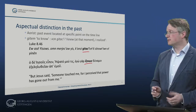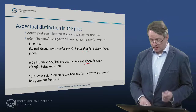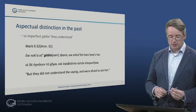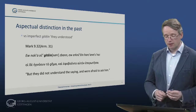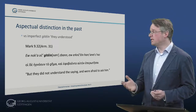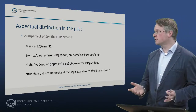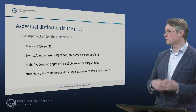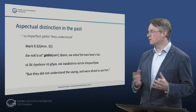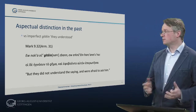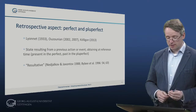In contrast, the imperfect 'gitein' — 'yev nuke hav vodsch gitein is banen' — but they didn't understand the saying and were afraid to ask him — represents a state of affairs lasting for a longer time, not located at a specific moment, because they didn't understand this for quite some time.